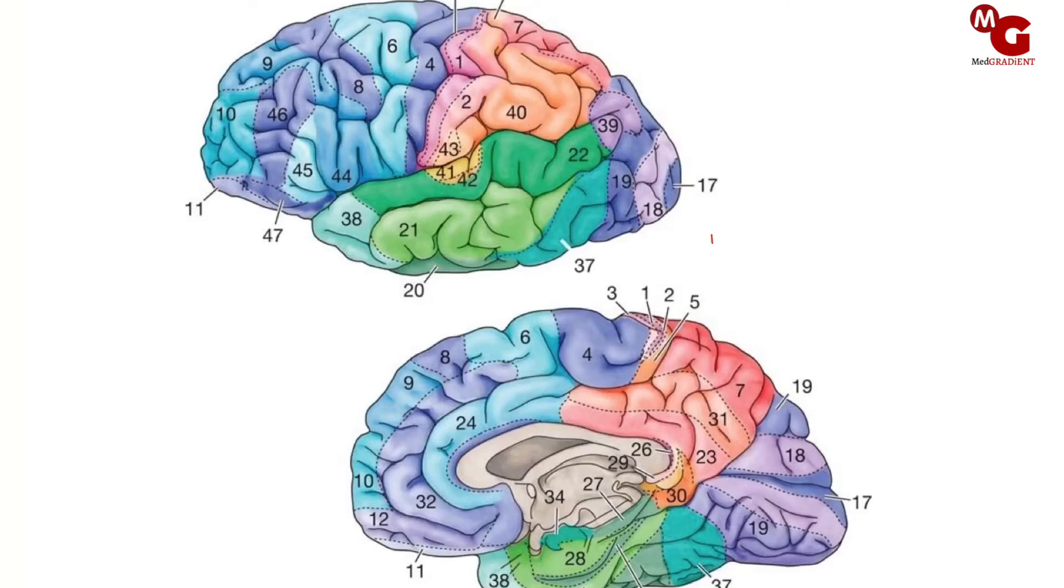What are the areas we will be discussing today? We will start from area number 1, 2, 3, then 4, 5, 6, then we directly jump to 9, then we have 10, then we go from 17, 22, 37, then we go to Wernicke's area and Broca's area.